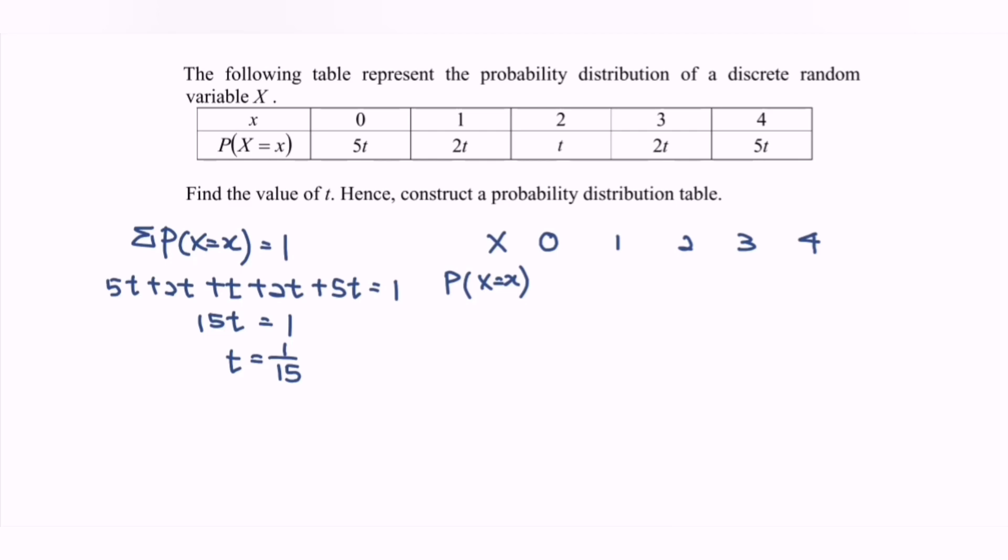First we have 5 over 15. If we simplify this, we will have 1 over 3. Next, we have 2 multiplied with 1 over 15, so we will have 2 over 15. For the random variable x equals 2, we will have 1 over 15, followed by 2 over 15, and finally we have 1 over 3.